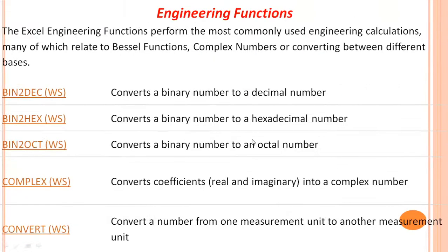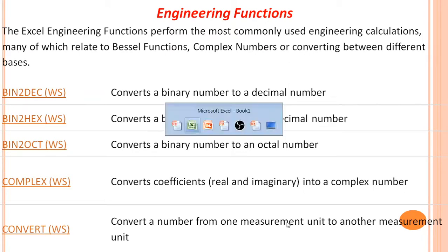Last one: engineering function. The Excel engineering functions perform the most commonly used engineering calculations, many of which relate to complex numbers or converting between different bases — for example, converting a binary number to a decimal number, a binary number to a hexadecimal number, and a binary number to an octal number.